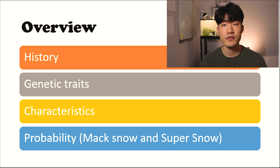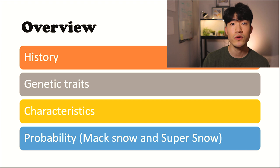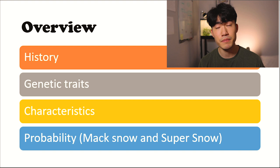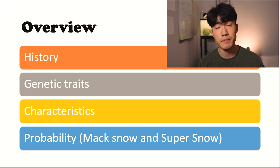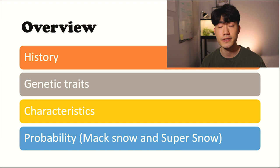Before I begin my PowerPoint, there are four different categories I want to go over. Number one is the history — how it was found and who found the morph. Number two is the genetic traits, whether it's incomplete dominant, dominant, recessive, or line breed, which is also called polygenetics. Number three is the characteristics — what happens when you put MAC Snow in your projects, with example photos. And fourth, I have probability examples. Since it's incomplete dominance, there could be a super form for MAC Snow, so I'll give you all the percentages for MAC Snow paired with normal, MAC Snow to MAC Snow, or Super Snow to Super Snow. When you watch this video until the end, you'll pretty much have mastered the MAC Snow.